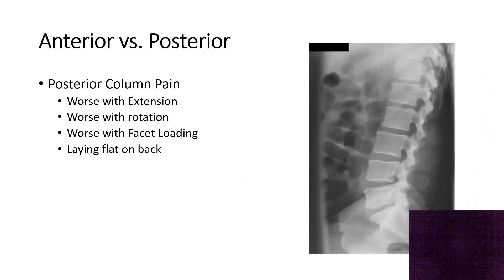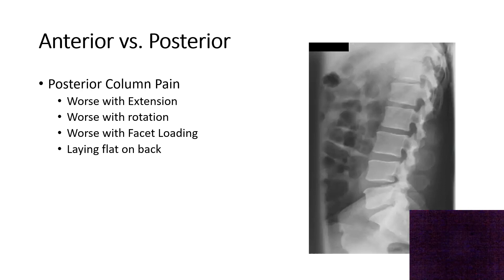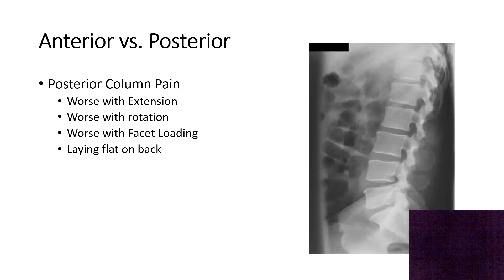Shifting to posterior column pain: this is pain in your back that is worse with extension, rotation, or side bending because it causes facet loading. It could also be worse when you lay flat on your back, as you tend to be in extension. These patients tend to feel better when they lean forward, because that takes the pressure off the facets and puts it onto the anterior column.